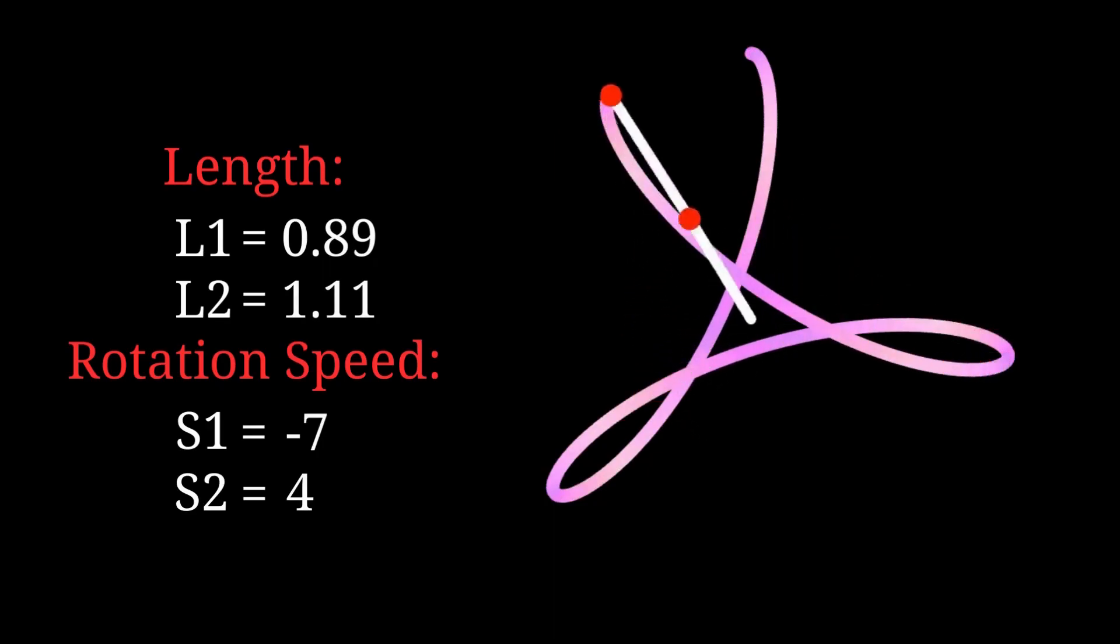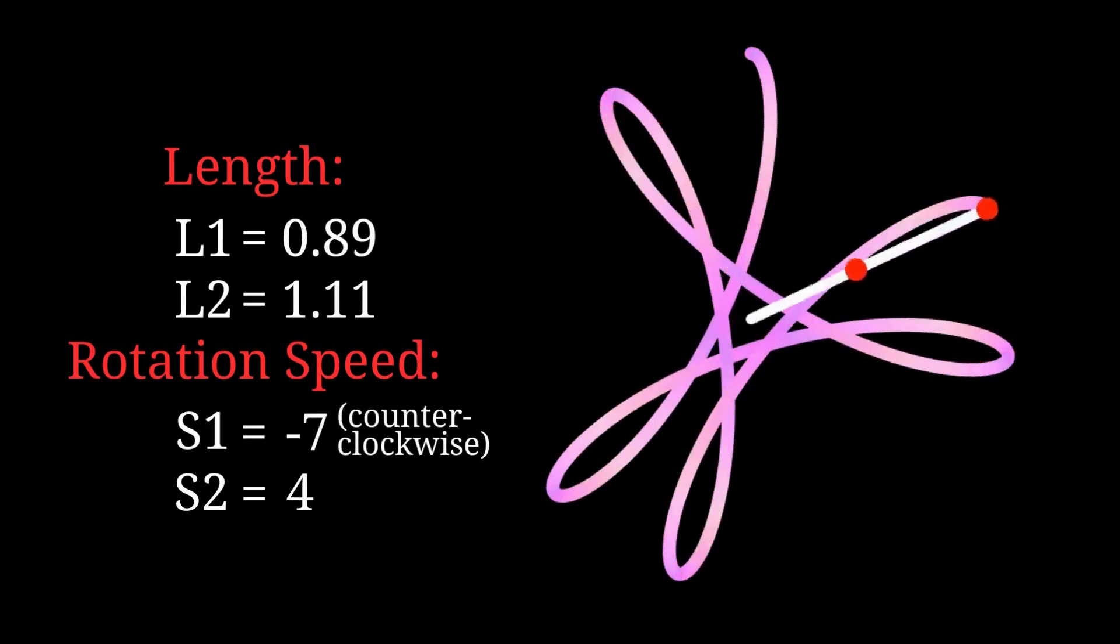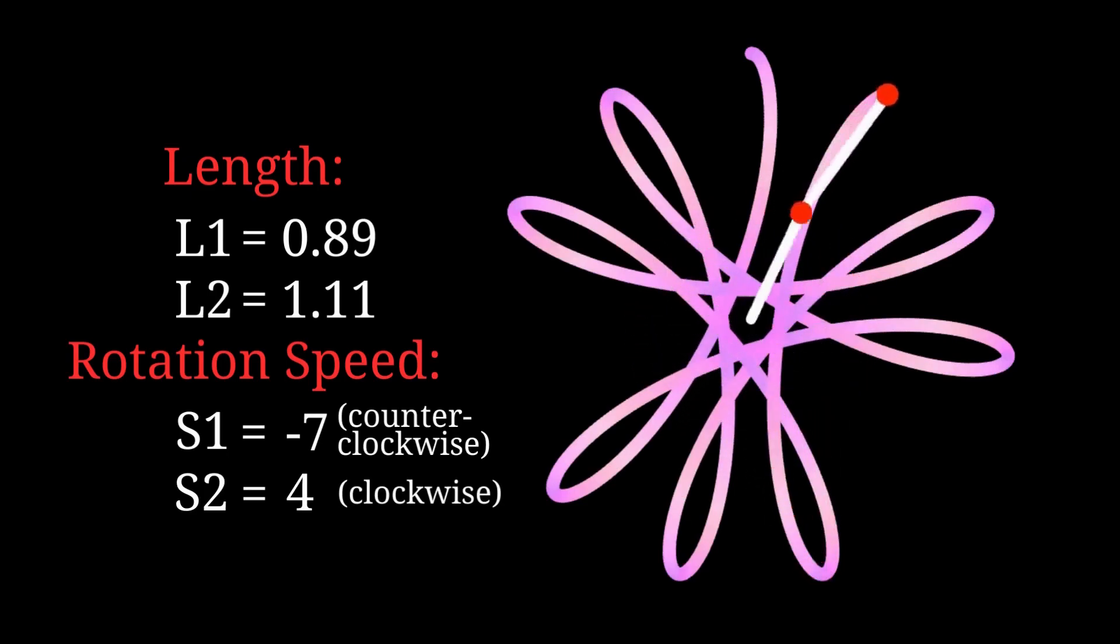A negative speed indicates counterclockwise rotation, while a positive speed indicates clockwise rotation.